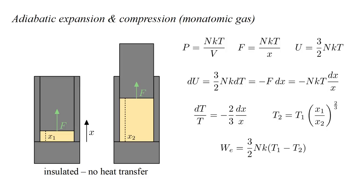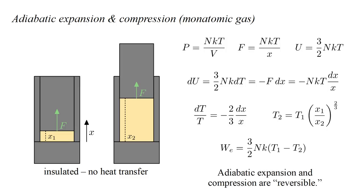When the gas temperature changes from T-1 to T-2, the internal energy change is three-halves NK times the temperature change, and this is converted into work done on the environment. For compression, we simply reverse the direction of the force and move the piston from X-2 to X-1. The gas returns to its original temperature T-1, and the work done on the environment during expansion is now done on the gas. An expansion-compression cycle returns everything to its original state — adiabatic expansion and compression are reversible.